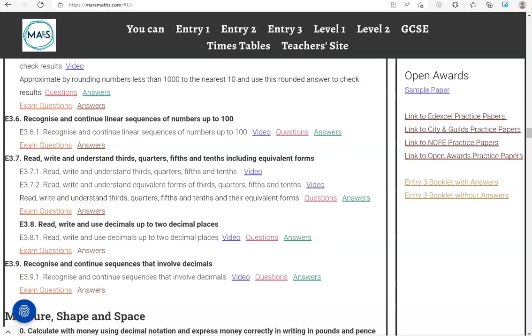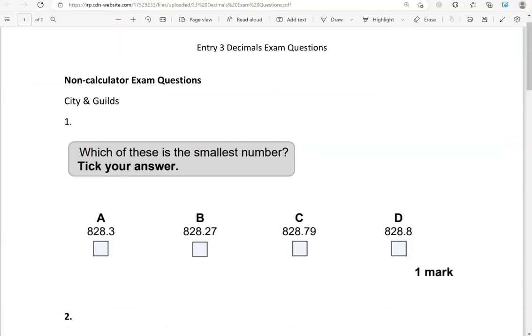In this video we'll go through exam questions that cover the criteria read, write and use decimals up to two decimal places. You can locate the questions on the massmath.com website under entry 3. The questions come from different exam boards. We'll start with the non-calculator questions and then we'll move to the calculator questions.